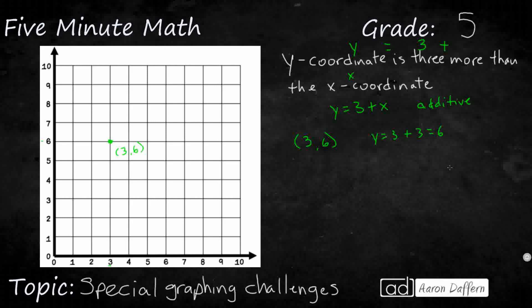If we want to keep it on the graph, we need to make sure our x value doesn't get too high. Let's try x equals five. So y equals three plus five, which equals eight. So that's five comma eight.